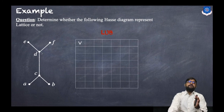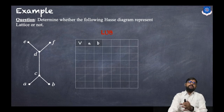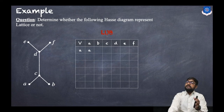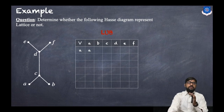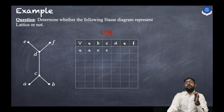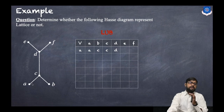In the table there are six points: a, b, c, d, e, and f — write these in both columns and rows. For the LUB table: LUB(a, a) = a; LUB(a, b) = c; LUB(a, c) = c; LUB(a, d) = d; LUB(a, e) = e; LUB(a, f) = f.